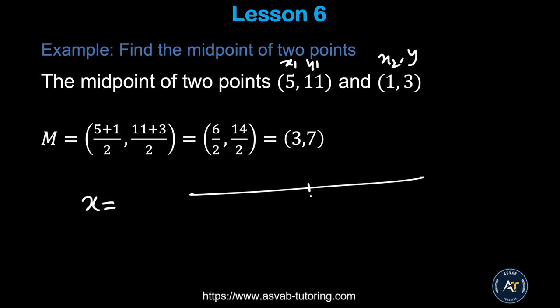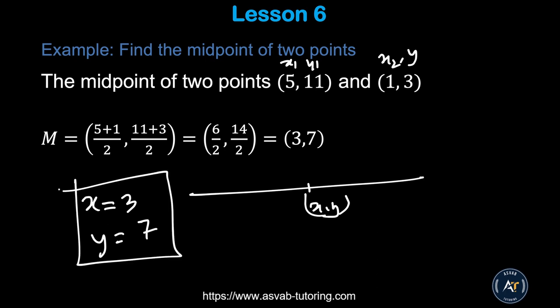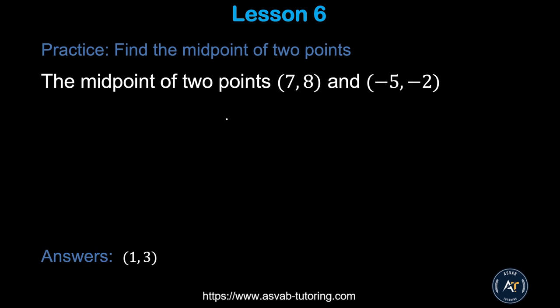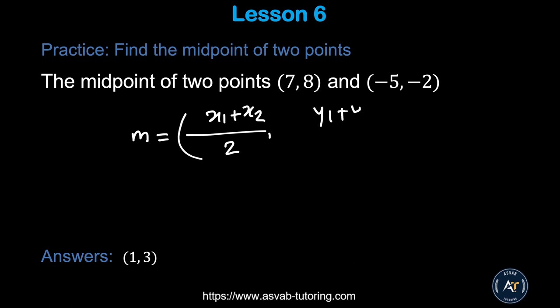Plugging in the values and simplifying, the x-component is 3 and y is 7, giving midpoint (3, 7). Pause the video and try it yourself — you will always see this type of problem on the actual test. Then try the practice problem using m = ((x₁ + x₂)/2, (y₁ + y₂)/2) and confirm your answer.